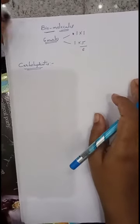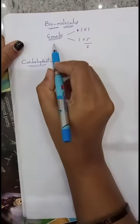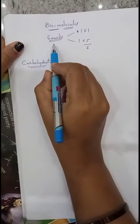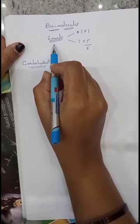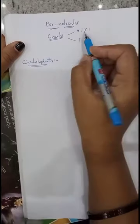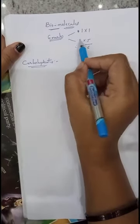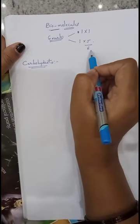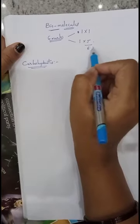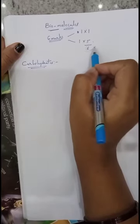Hi students, in this video we will discuss about the chapter biomolecules. This chapter is very important and the smallest chapter. From this chapter you will get totally 6 marks. In that you will get 1 one-mark question and 1 five-mark question, and the total weightage of this chapter is finally 6 marks.